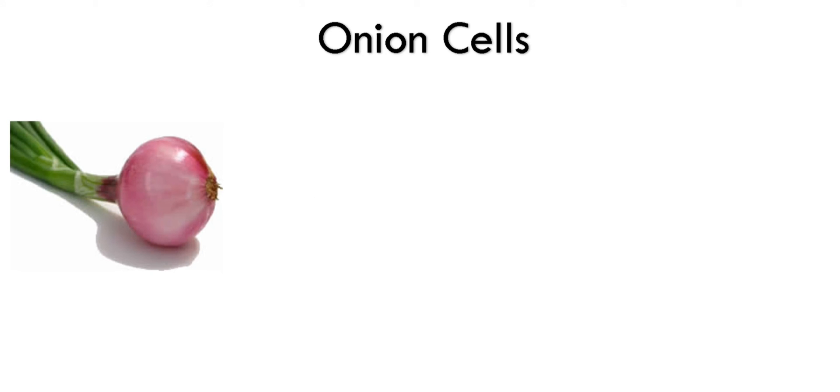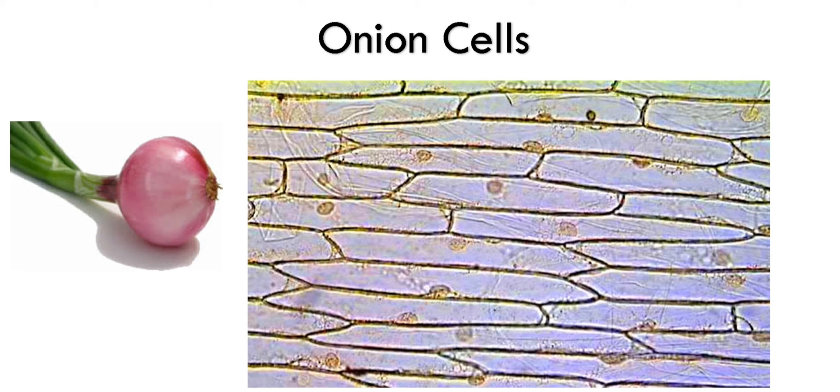Children, when we take a thin slice of onion peel and observe it under the microscope, this is how we get to see the cells of onion under the microscope. Here we can see the nucleus - circular structures are nuclei. Plural of nucleus is nuclei. So we can see clearly the nuclei of onion cells, and also we can see the cell wall very clearly. This is the cell wall. Nuclei and the cell wall can be seen clearly under the microscope.